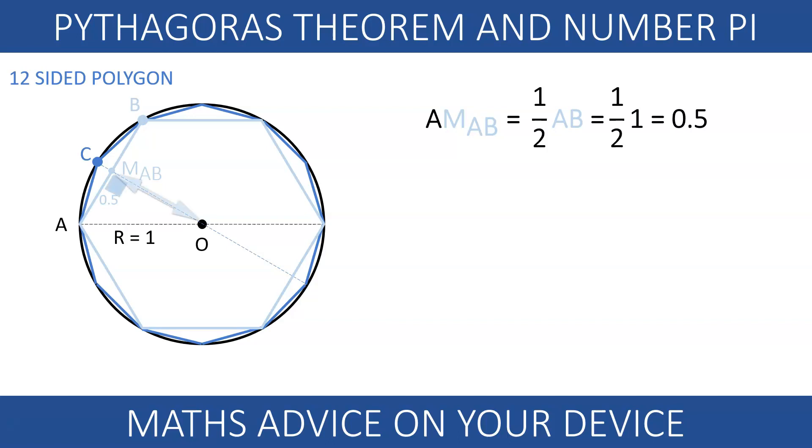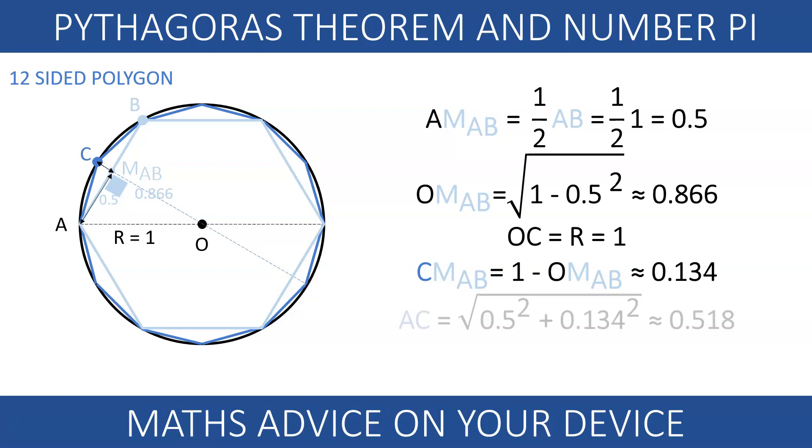We can now use Pythagoras. Since the angle is 90 degrees, the side joining the center and the midpoint is the square root of the difference of the square of the hypotenuse 1 and the previous length 0.5. Since OC equals the radius 1, the length joining C and the midpoint is 0.866. Using this result and the length 0.5, we can use Pythagoras again to figure out the hypotenuse AC. The length is 0.518.